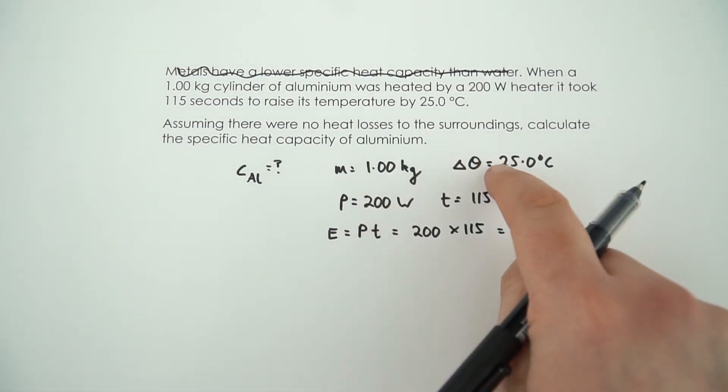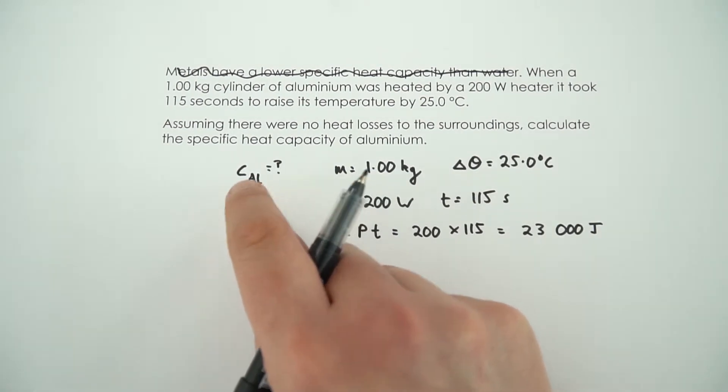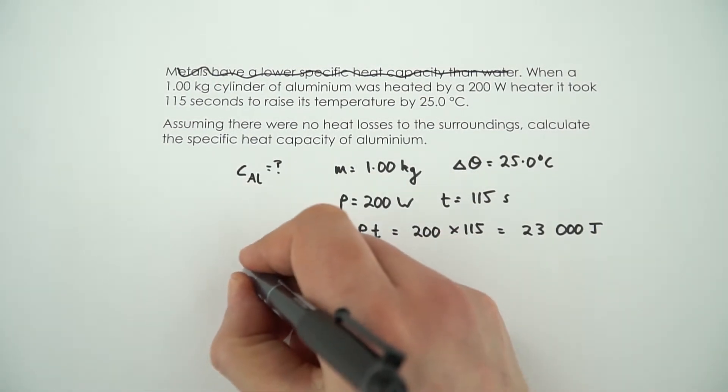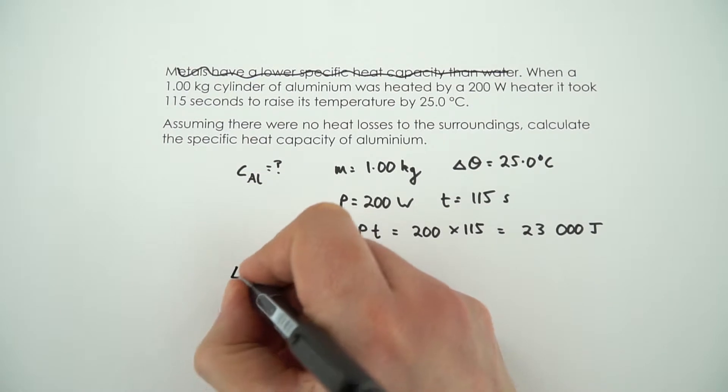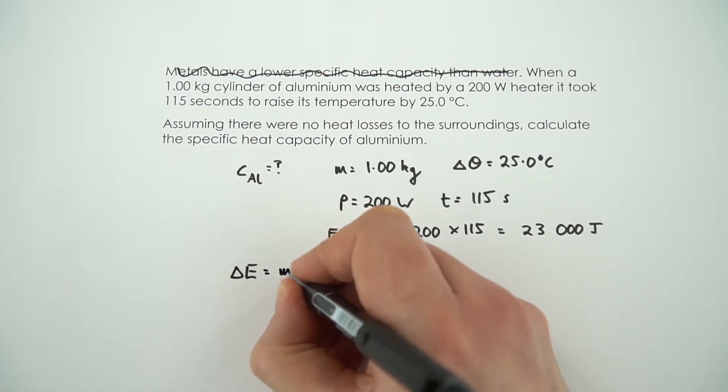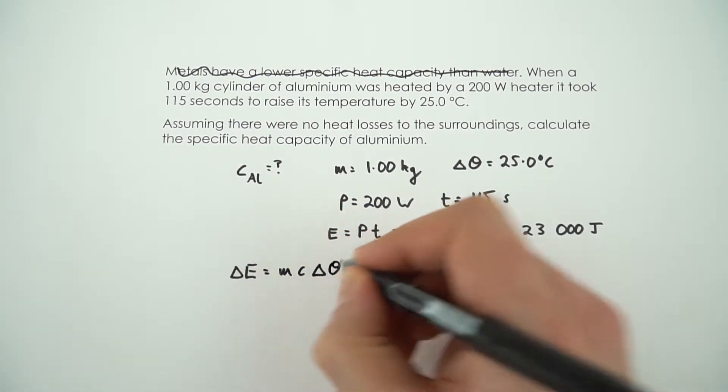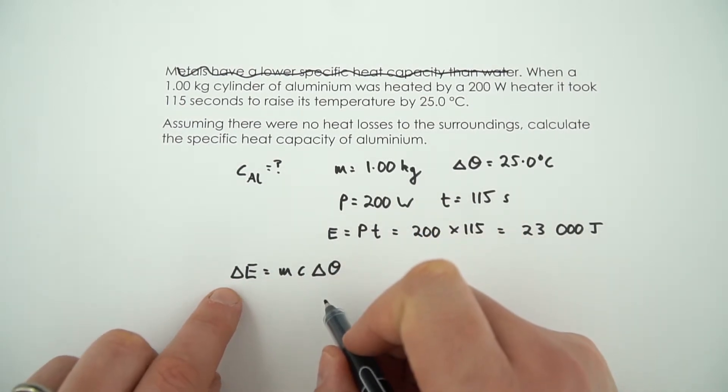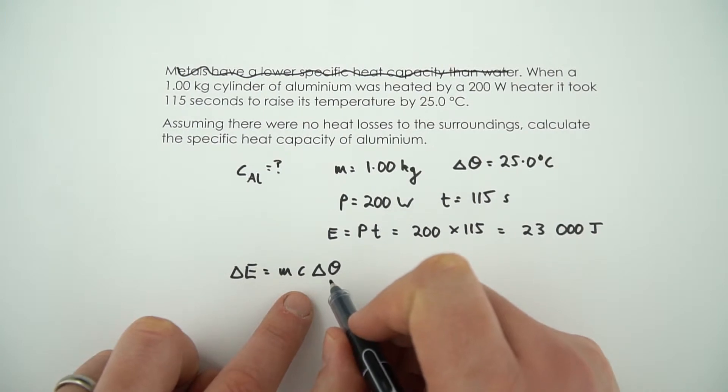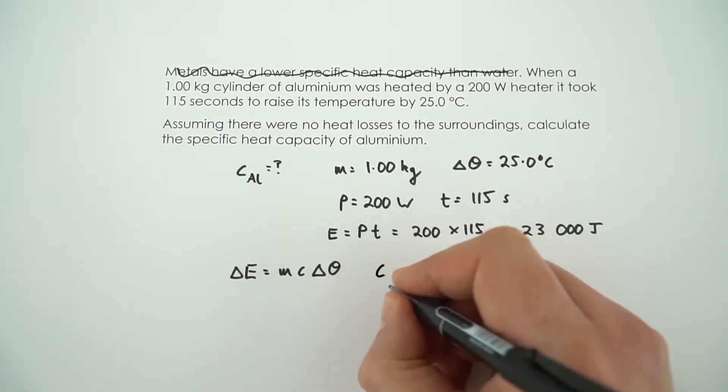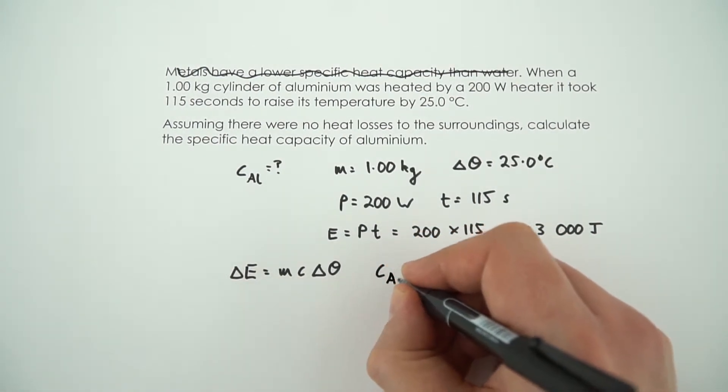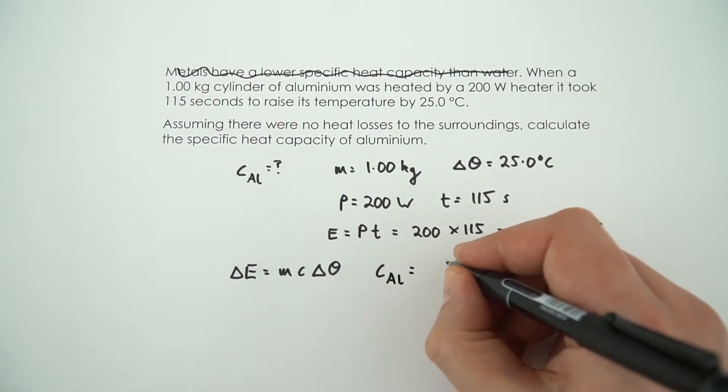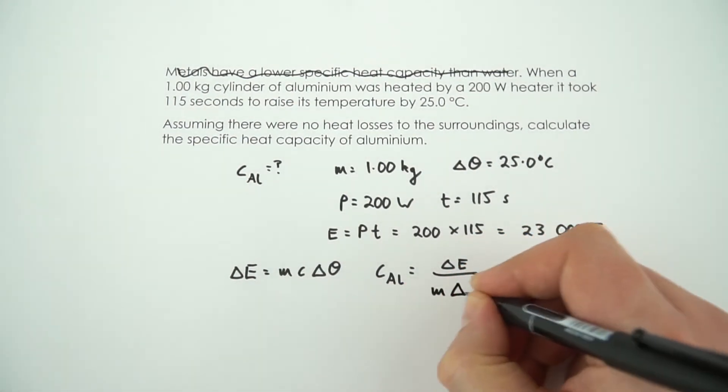And we can use that to work out the specific heat capacity. So the change in energy is going to be equal to mc delta theta. And we need to find this. So we can rearrange this by dividing the change in energy by the mass and the change in temperature, to say that the specific heat capacity of aluminum is equal to change in energy divided by m delta theta.